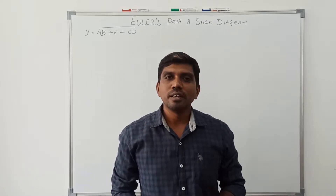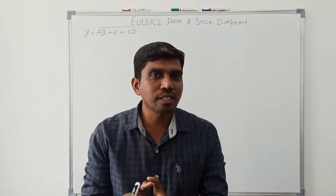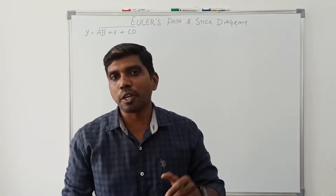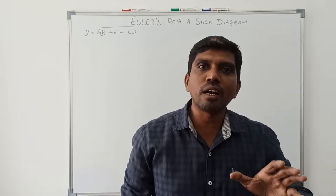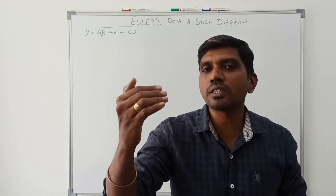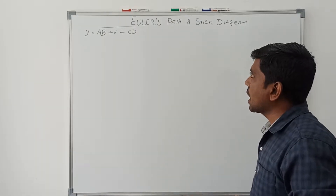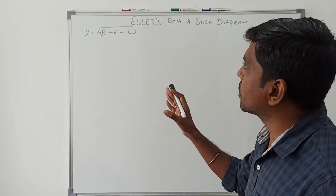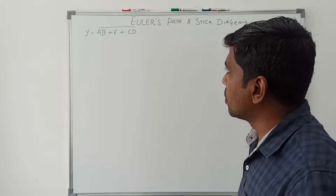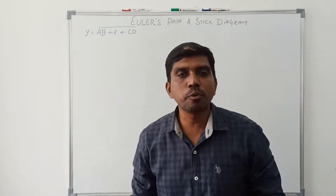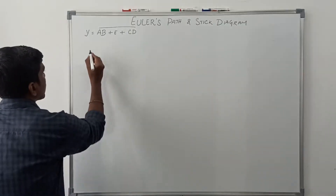Welcome back to the channel. Today I am going to teach how to draw the Euler's graph on stick diagram for a corresponding Boolean expression. Before drawing the Euler graph on stick diagram, first you draw the CMOS logic for the given Boolean expression. In this session, I am taking one Boolean expression: Y = AB + E + CD (the whole bar).